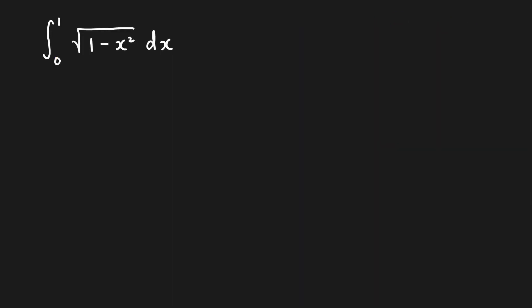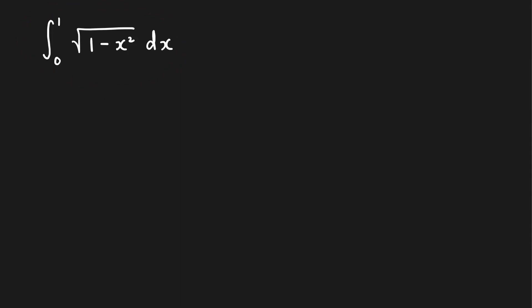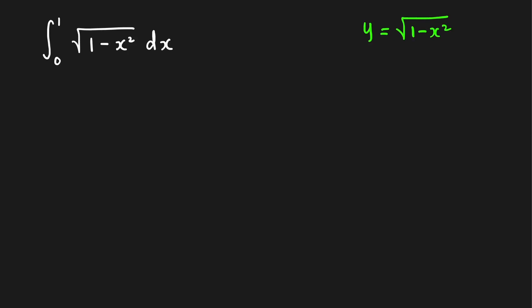Next problem. We can easily evaluate this integral if we know the geometric interpretation of a definite integral in terms of areas. For a non-negative function, the definite integral from a to b is the area of the region bounded by that function and the x-axis. The graph of y equals the square root of 1 minus x squared — squaring both sides gives x squared plus y squared equals 1, a circle centered at the origin with radius 1. Since y is greater than or equal to 0, the graph is a semicircle.